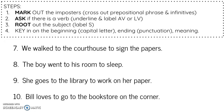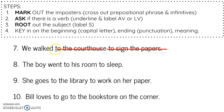Number seven — pause the screencast and check yourself as you go, because the last couple you'll do on your own. "We walk to the courthouse to sign the papers." I see "to" — "the" isn't a verb, so this must be a prepositional phrase. To the courthouse — courthouse is a place, so that's a prepositional phrase. "To sign" — sign is a verb, so "to sign the papers" is an infinitive phrase. I'm left with "we walked." Walk is an action verb. Who walked? We. That's the subject.